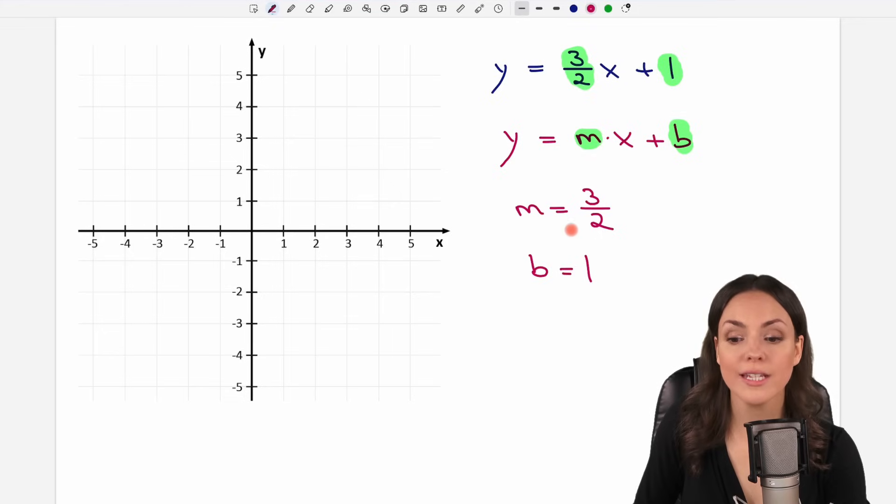And now if we want to draw this line we always start with the b. b equals 1. So we go to our y-axis and search for this number for the 1. The 1 is here. We can draw a little x. This is our first point of our line. But now we need a second point and we find this with our m. m is the slope of our line. And we find the slope by rise over run.